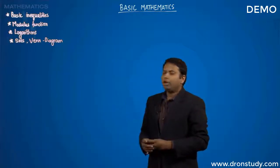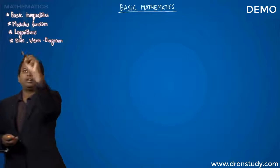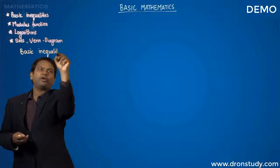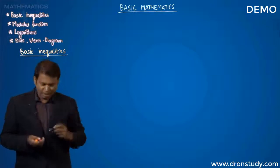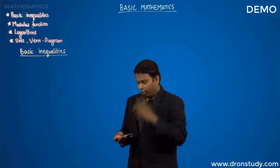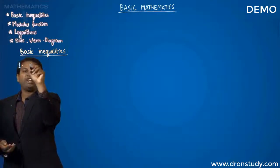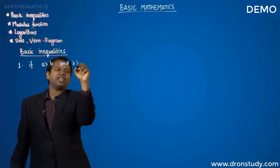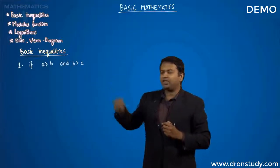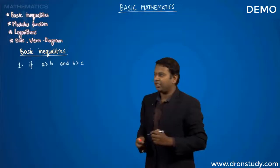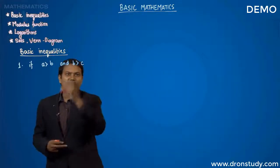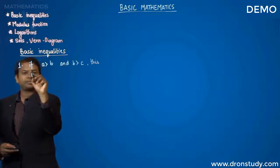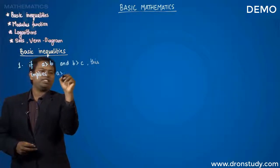Let us begin our discussion with basic inequalities. The first inequality: if a, b, c are three numbers such that a is greater than b and b is greater than c, then this implies a is greater than c.